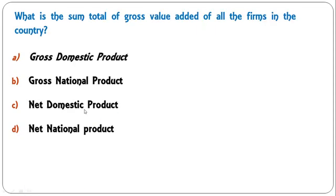What is the sum total of gross value added of all the firms in the country? The gross value added of all the firms in the country is known as Gross Domestic Product (GDP). So the first option is the correct answer.